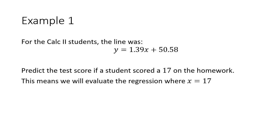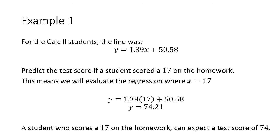The homework was my independent variable x, the exam score was the dependent variable y. I'm just going to plug it into my line. I do my order of operations, so multiply the 1.39 times 17, then add the 50.58, and I get 74.21.